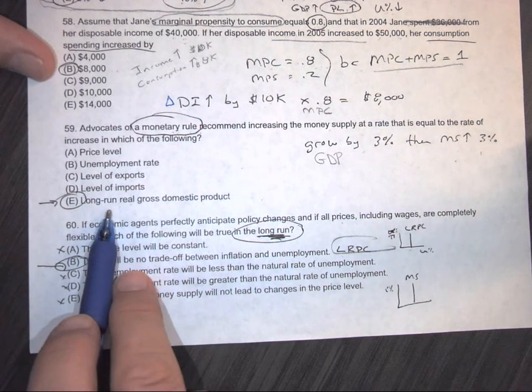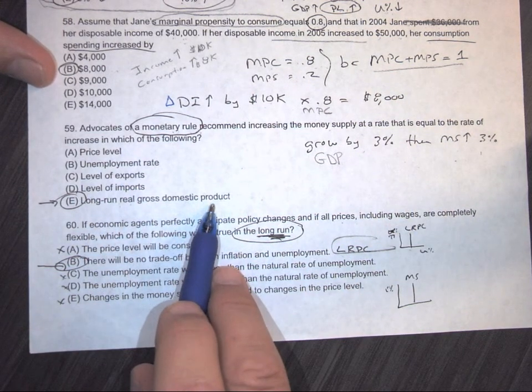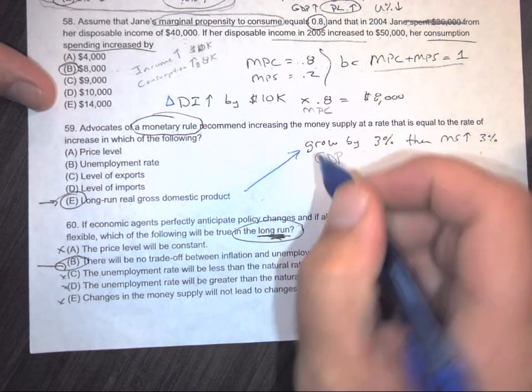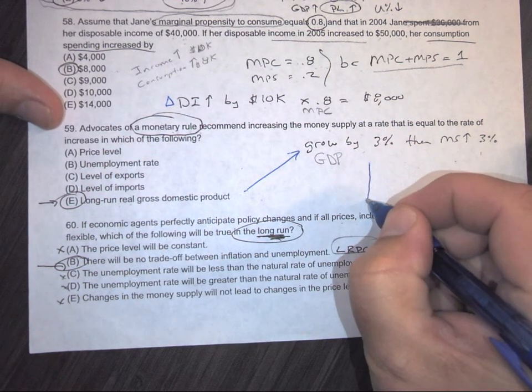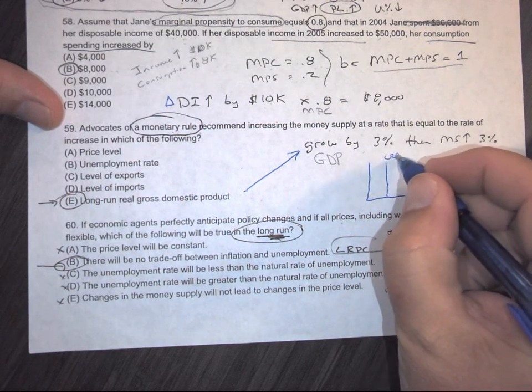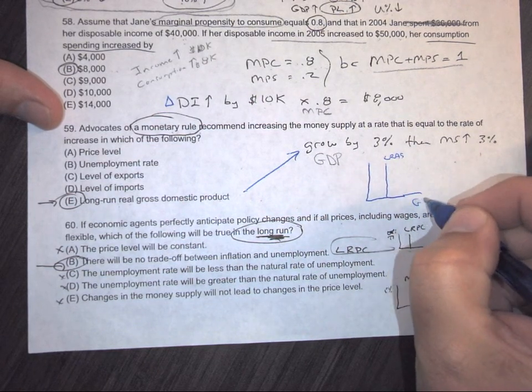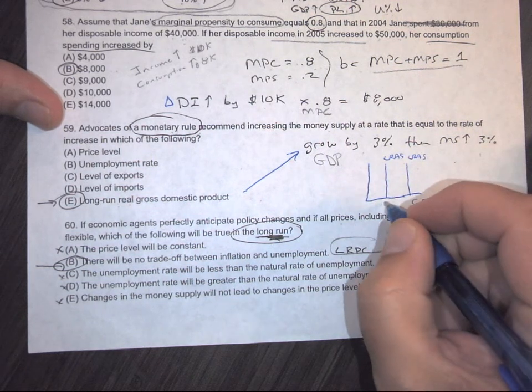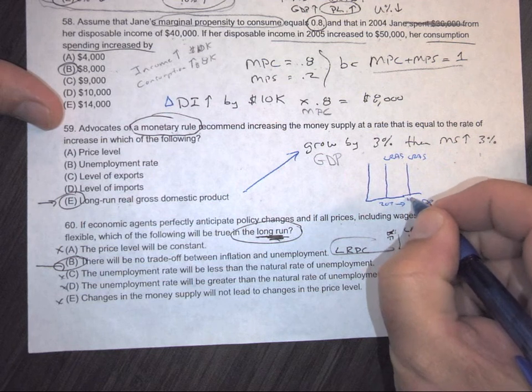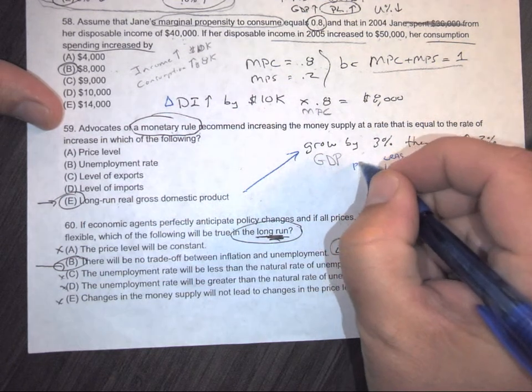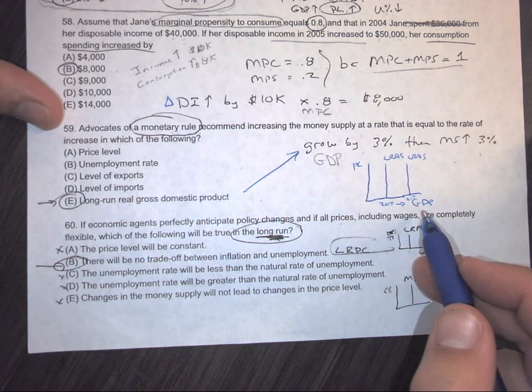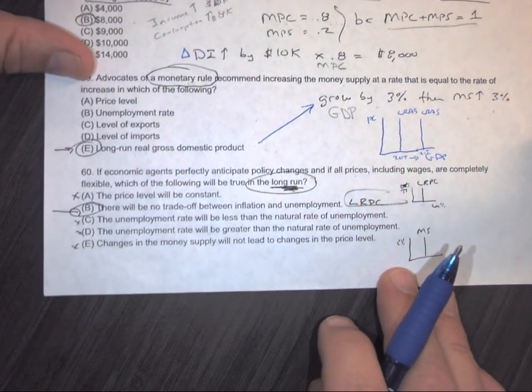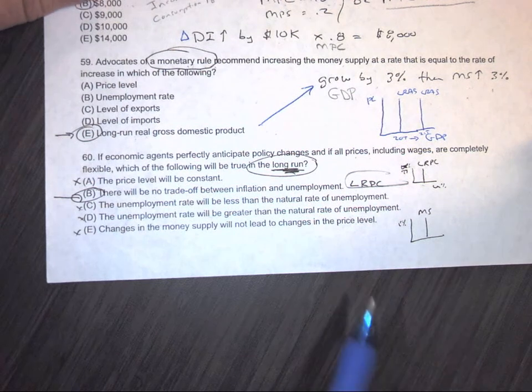So, what we're looking at is long-run real GDP. That's associated to growth, isn't it? So, long-run growth. Remember we have this right here. Long-run aggregate supply. This is how much GDP we have. So, if we're at $20 trillion and we grow to $21 trillion, we need more money, don't we? We need a trillion more dollars to keep up. Okay? So, answer is E. Monetary rule. Okay.